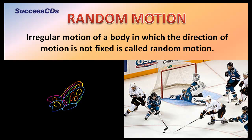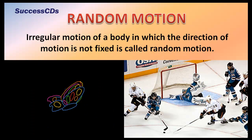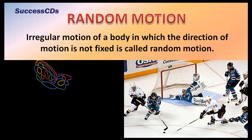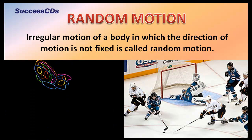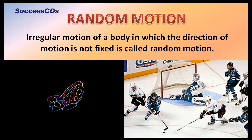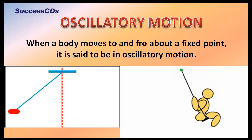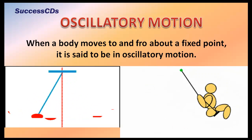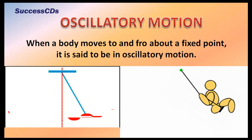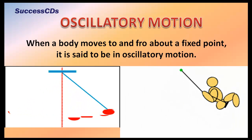When a body moves to and fro about a fixed point, it is said to be in oscillatory motion — for example, the motion of a pendulum and a swing.